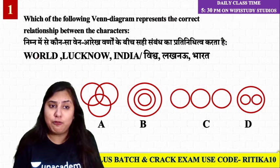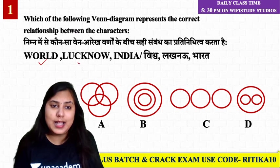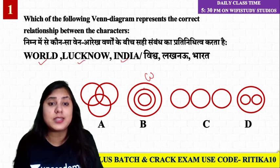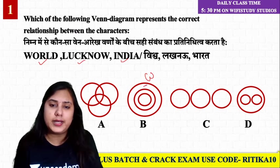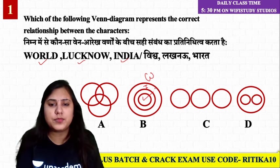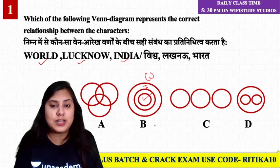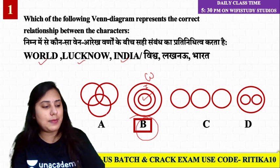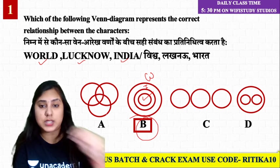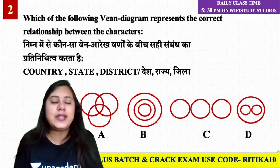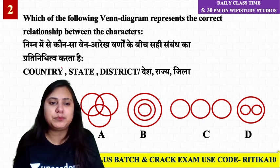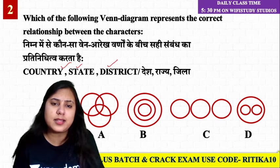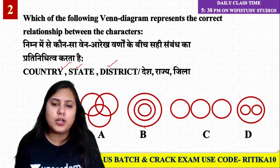For example: World, India, Lucknow. World will be the largest circle, India will come inside it, and Lucknow will come inside India. The answer is option B. Similarly, Country, State, and District follow the same pattern — each one contained within the other. The answer is B.